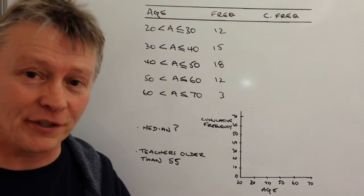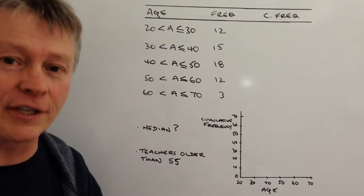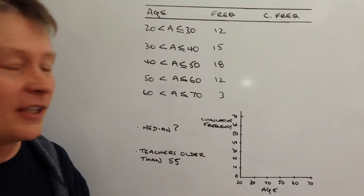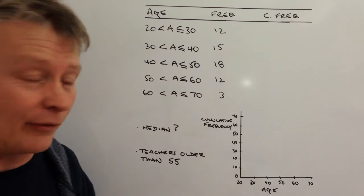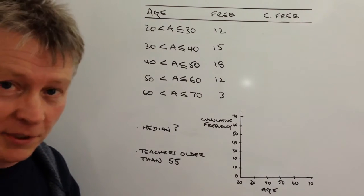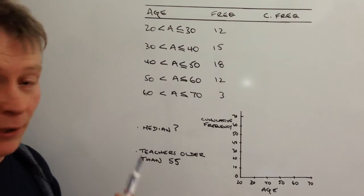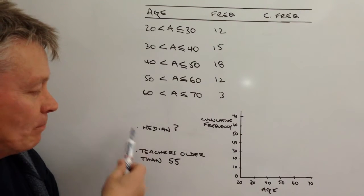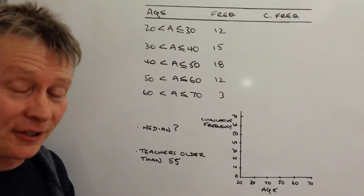So what we're going to be asked to do is to plot a cumulative frequency diagram. These are very closely aligned to box plots—you get very similar information from them—but in this particular case it's all about cumulative frequency. Once we've plotted it, we're going to be asked to find the median and also, in this particular case, teachers older than 55.